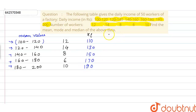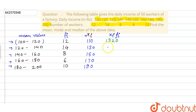Now we calculate xi*fi by multiplying xi and fi for each class. When we multiply 12 by 110 we get 1320; the next product is 1820; then 1200; then 1020; and the last product is 1900.